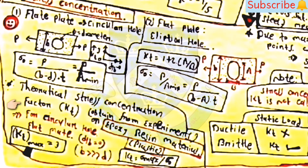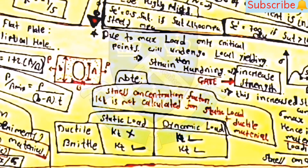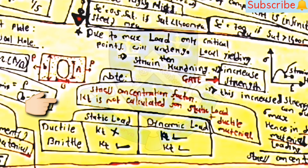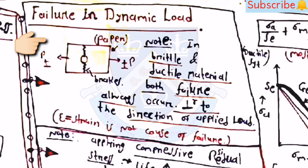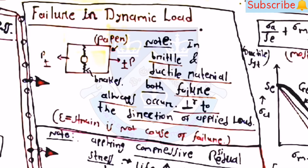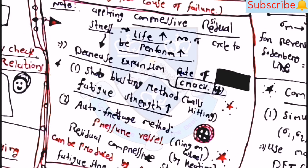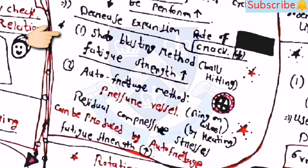K_T equals Sigma_max / Sigma_0. Remember that K_T is not calculated for static load on ductile material. For failure in dynamic loading, in both brittle and ductile materials failure always occurs perpendicular to the direction of applied load. Strain is not the cause of failure in dynamic loading. Applying compressive residual stress increases life, increases number of cycles to be performed, and decreases the crack expansion rate.